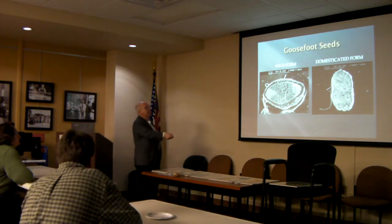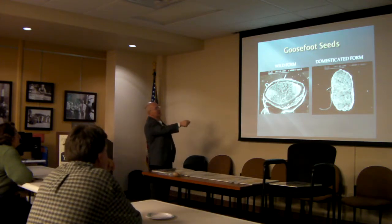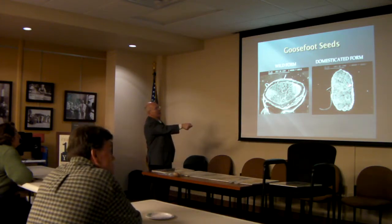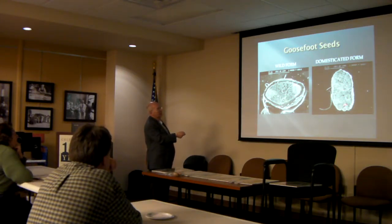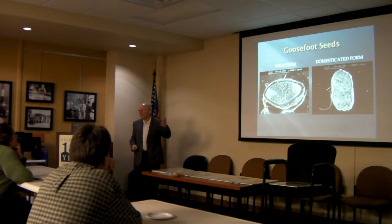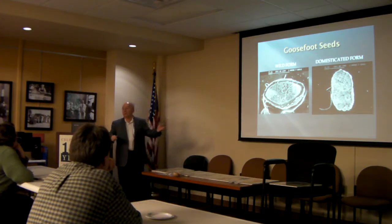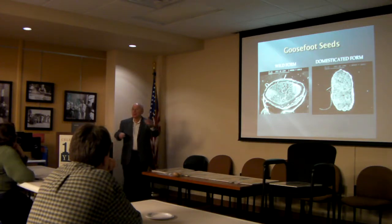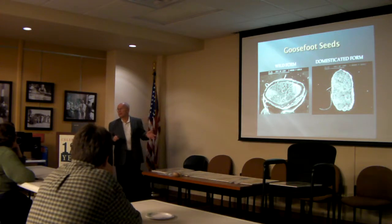This is the same species but the domesticated form — you're hard-pressed to even see a seed coat; it's almost gone. You can still see part of the embryonic root and the leaves, and look how much more food resource there is in there. With that thin seed coat, it germinates more reliably and has all this food to feed on. If you get a population of these going, they're reliable.